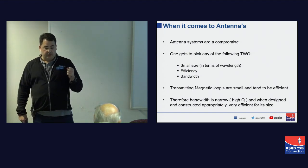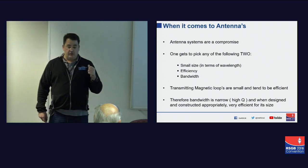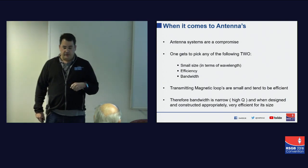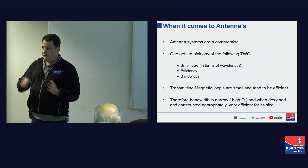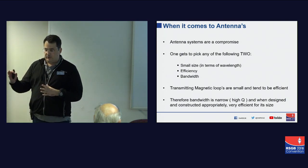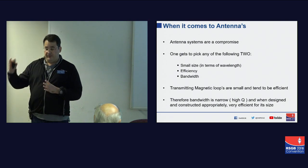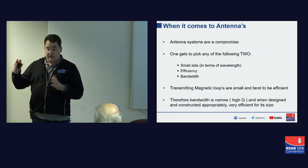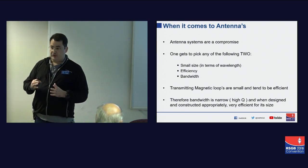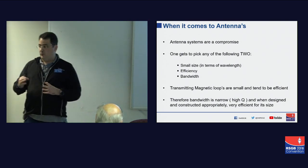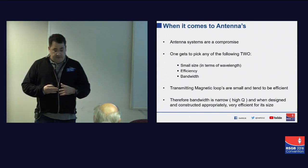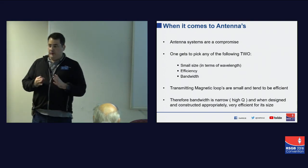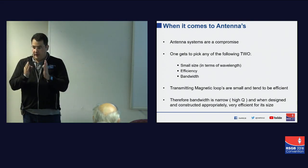Magnetic loops — certainly transmitting magnetic loops — are small relative to the wavelength, and they tend to be efficient if they're well designed and well built. Therefore the bandwidth is narrow and they have a high Q.